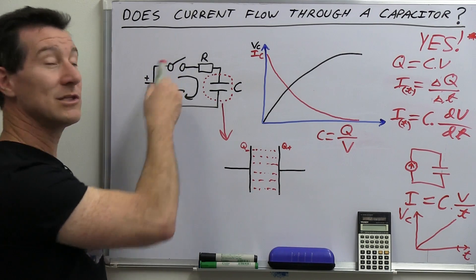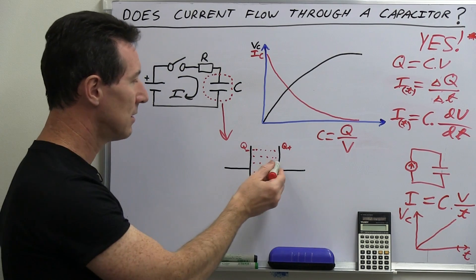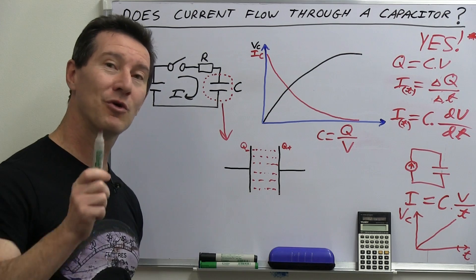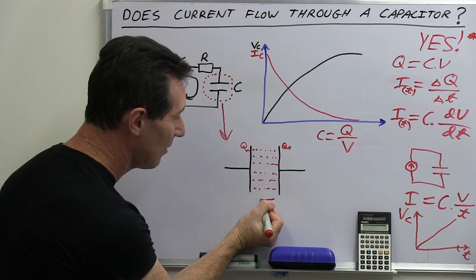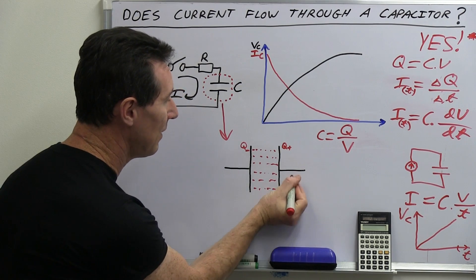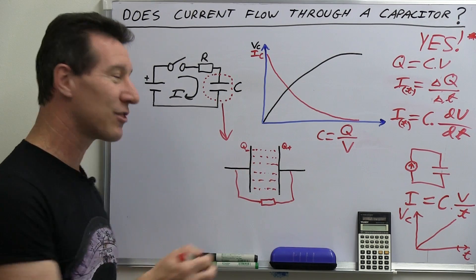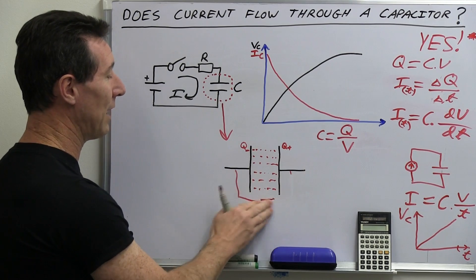But because it's like an open switch, no actual electrons actually flow through the material. And once again, we're talking about an ideal capacitor here in practice. Yes, there's a tiny little bit of resistance in there like that. So some electrons do actually sneak through the dielectric material.